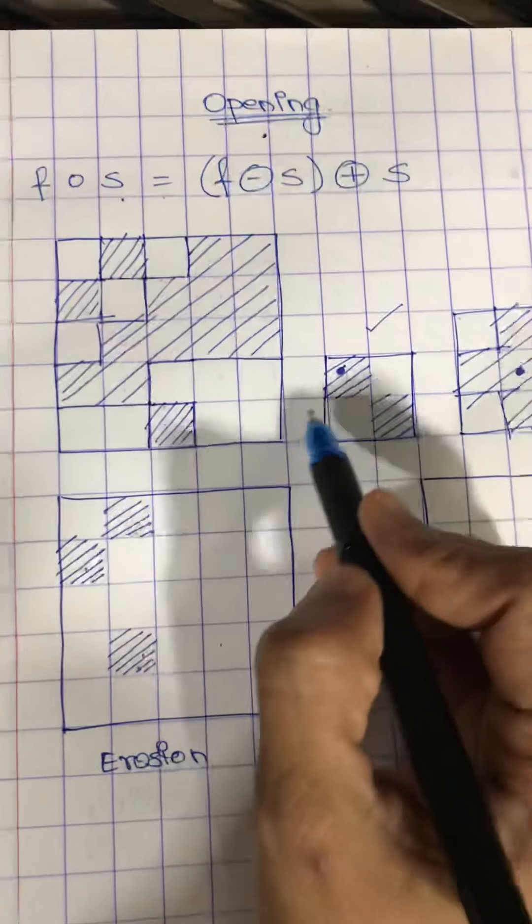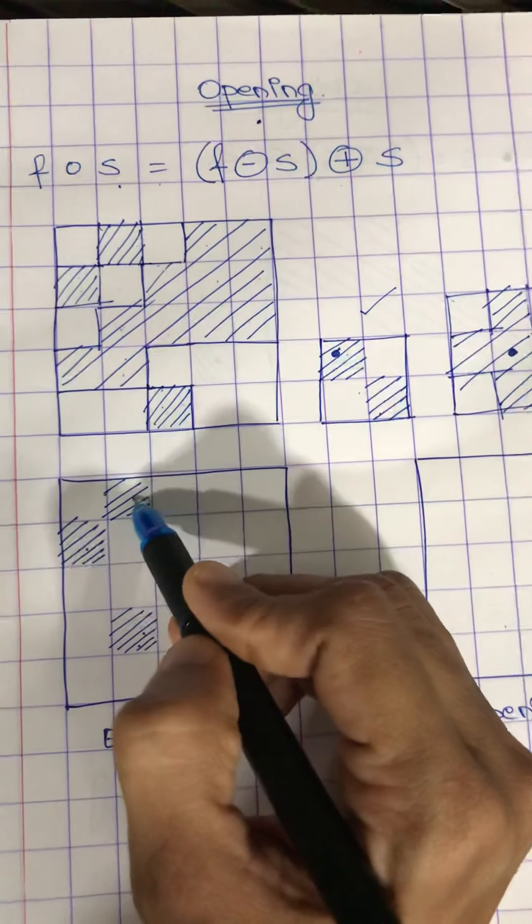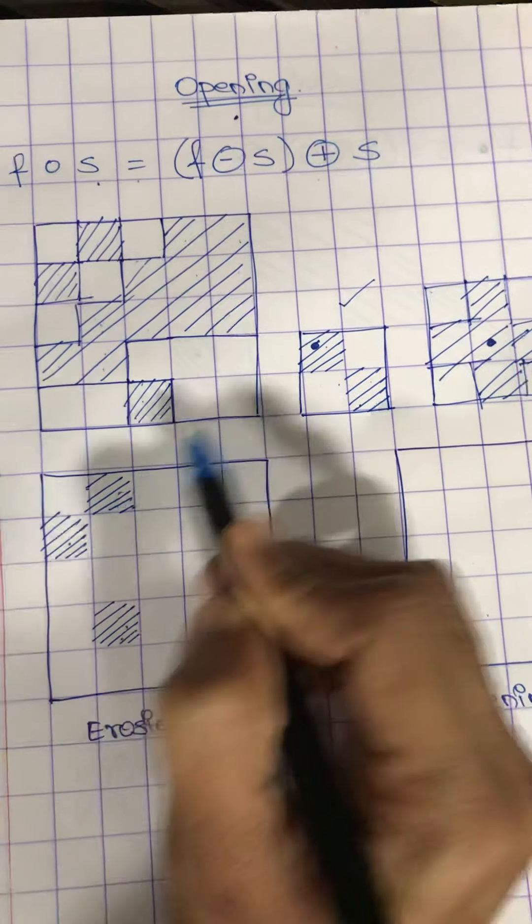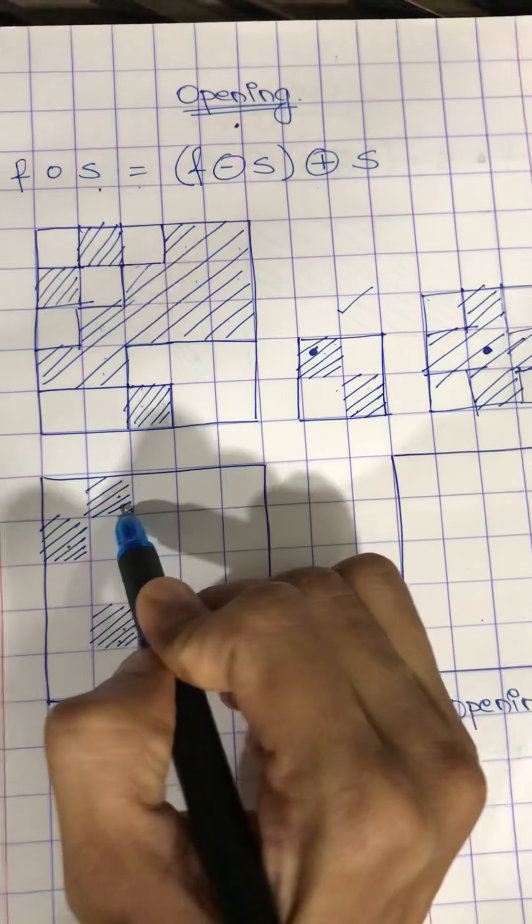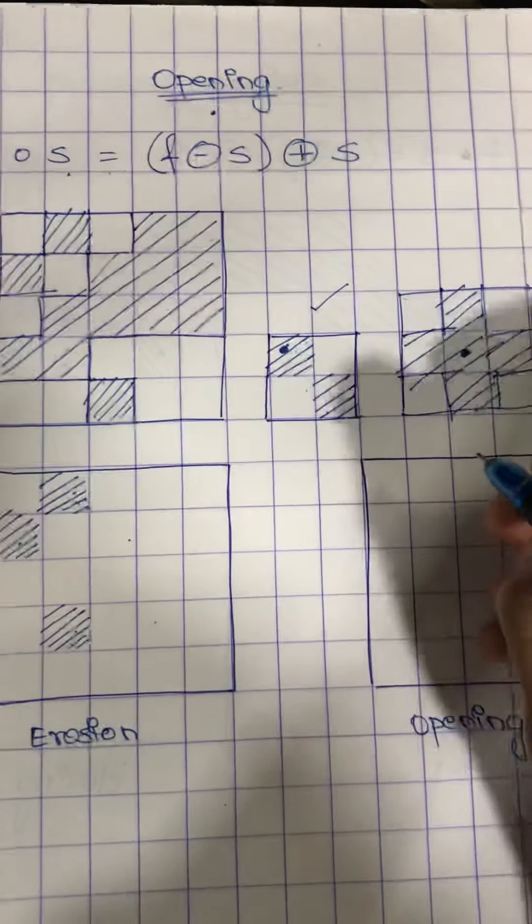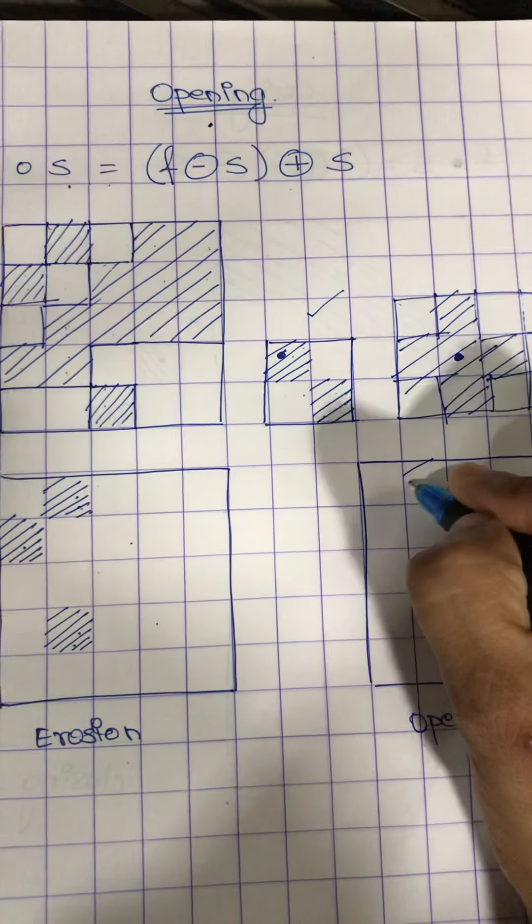So even here, as you can see, if I place my structuring element here, the origin is coinciding with the pixel. So here I have to copy the structuring element. So if I copy the structuring element here, it will be like this.